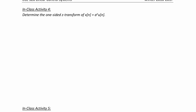In class activity four, determine the one-sided Z transform of X of n equal A to the n U of n. This is the summation from K equals zero to infinity of A to the K, U of K, Z to the negative K.